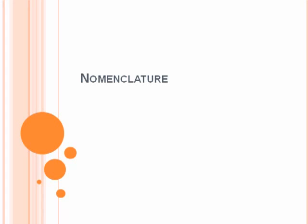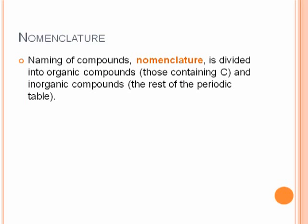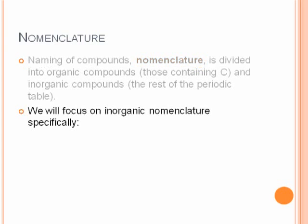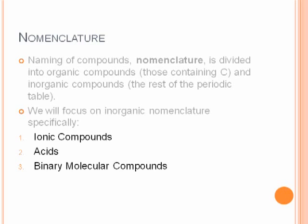This is a tutorial on nomenclature. If you need help with forming chemical formulas, look at my previous video on forming chemical formulas for ionic compounds. Nomenclature is simply naming compounds, the convention we use to decide what we're going to call things. It's divided into roughly two basic categories: organic compounds, which are primarily complex compounds containing carbon, and inorganic compounds, which is pretty much everything else. We're going to focus on inorganic nomenclature, mainly simple ionic compounds, acids, and biomolecular compounds.